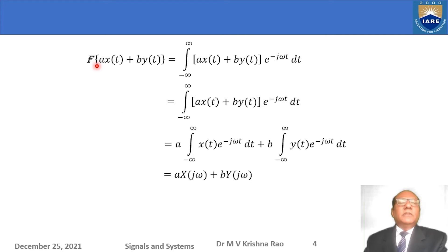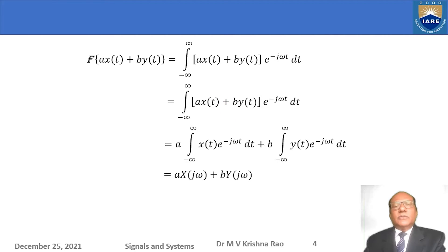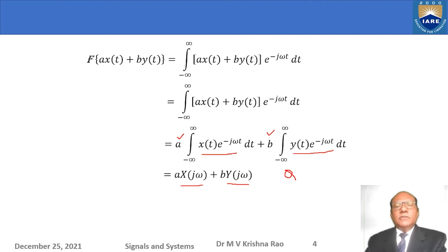Let us prove this — it is very simple. I take the linear combination a·X plus b·Y and apply the Fourier transform. After direct substitution, I separate the terms. Since a and b are constants, they come out of the integration. Each remaining integral is nothing but the individual Fourier transforms, so the linearity property is proved.